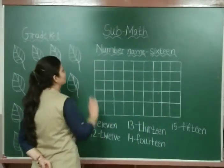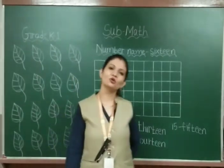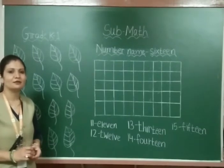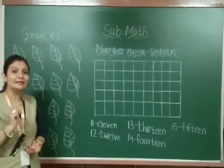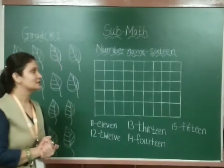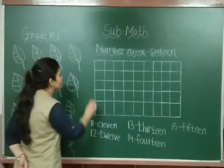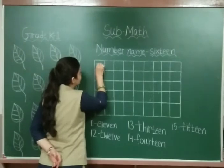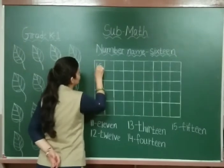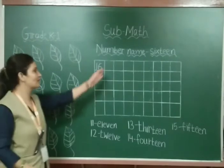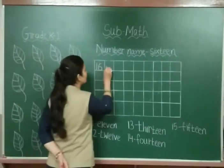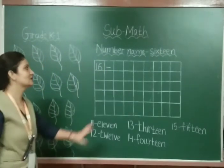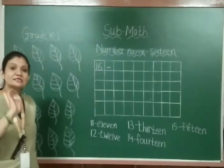Now see here how to write number 16. First of all, what do we have to write here? Here we have to write the number. Which number? 16. So 1 and then 6 — 1, 6, 16. After 16, what do we have to write? We have to put one dash or slipping line, like this.